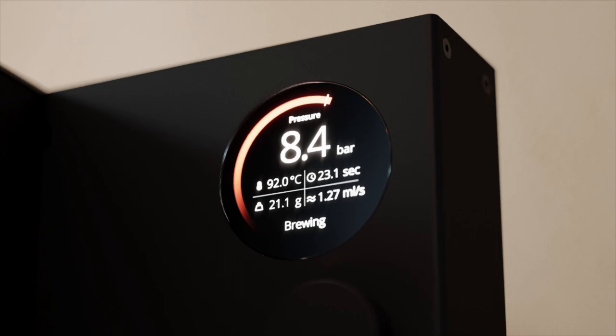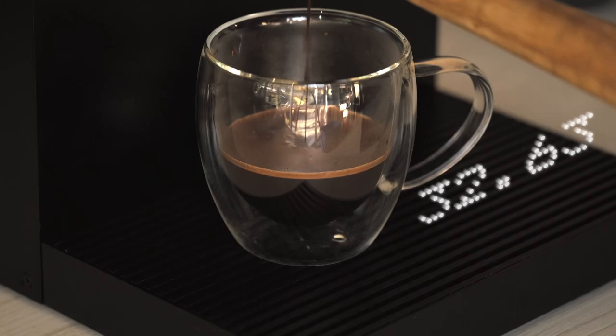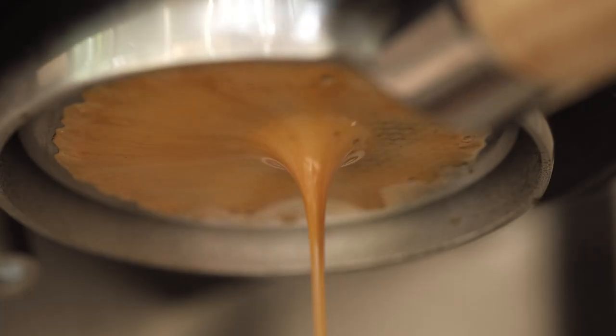As the puck resistance decreases, it switches from pressure control to flow control and stays constant at 1.27 milliliters per second until there are 36 grams of liquid in the cup. The piston retracts to create a vacuum and stop the flow instantly.